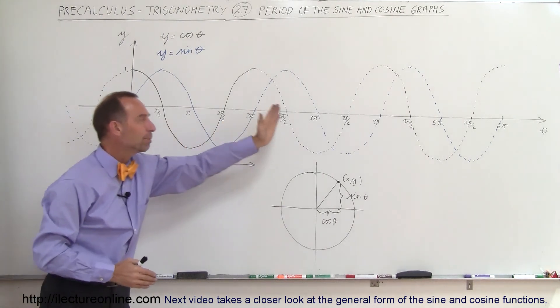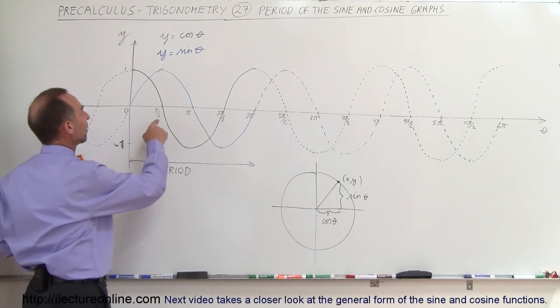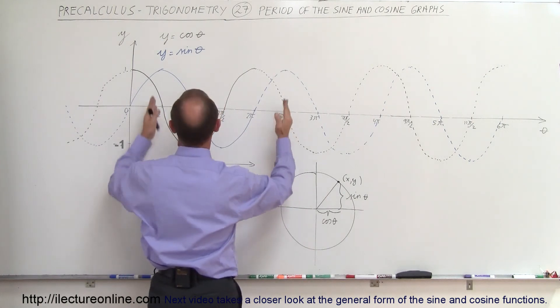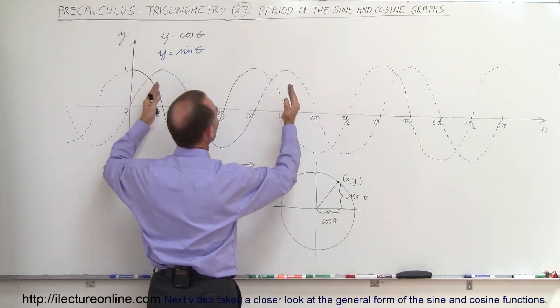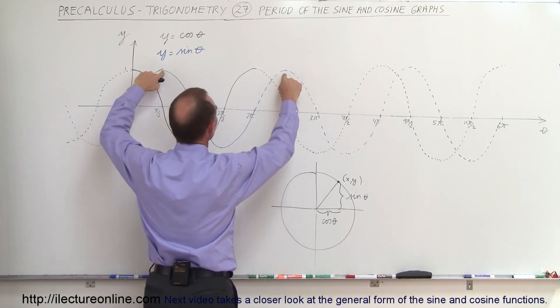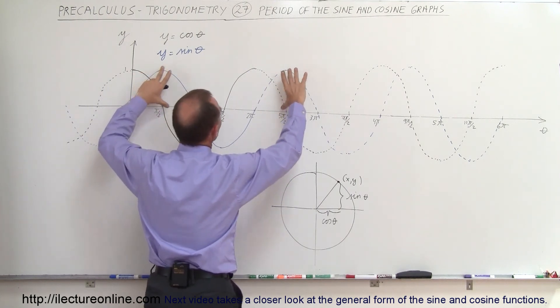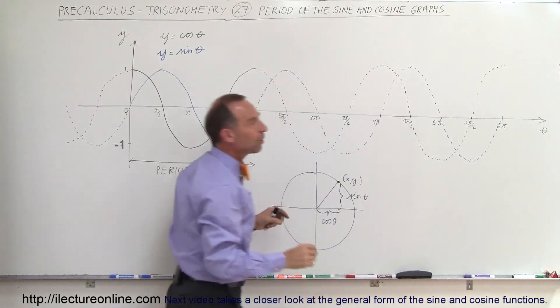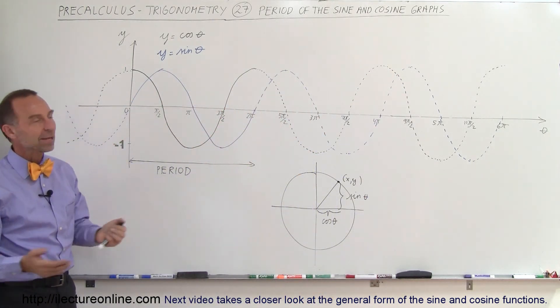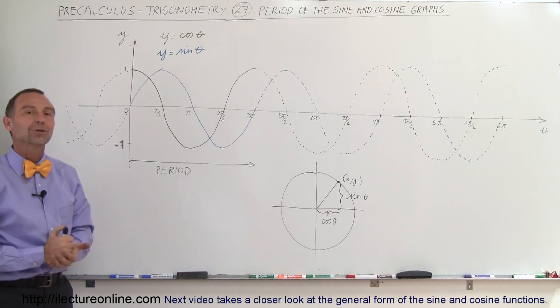If you take for example pi over 2, add 2 pi to that which gives you 5 pi over 2, you'll get the very same value for the cosine and the sine. Notice the cosine here is 0, the sine here is 1. Every time you move over a distance of 2 pi you will get the exact same values for sine and cosine, and that's what we mean by the periodicity of the sine and the cosine functions.